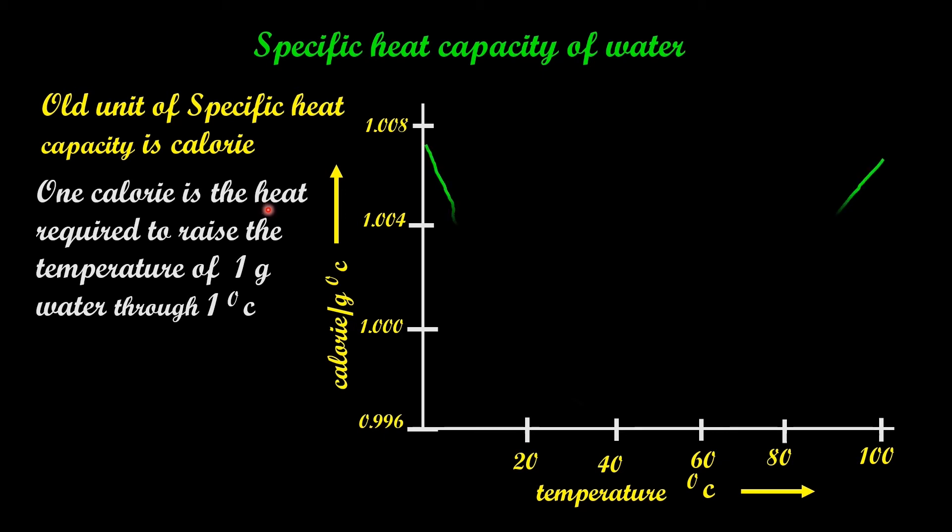This is the shape of the graph that is obtained. At 0 degrees Celsius, specific heat capacity is maximum and then it goes on decreasing with increase in temperature till 40 degrees Celsius. And after 40 degrees Celsius, the specific heat capacity goes on increasing with increase in temperature till 100 degrees Celsius when it becomes once again maximum.